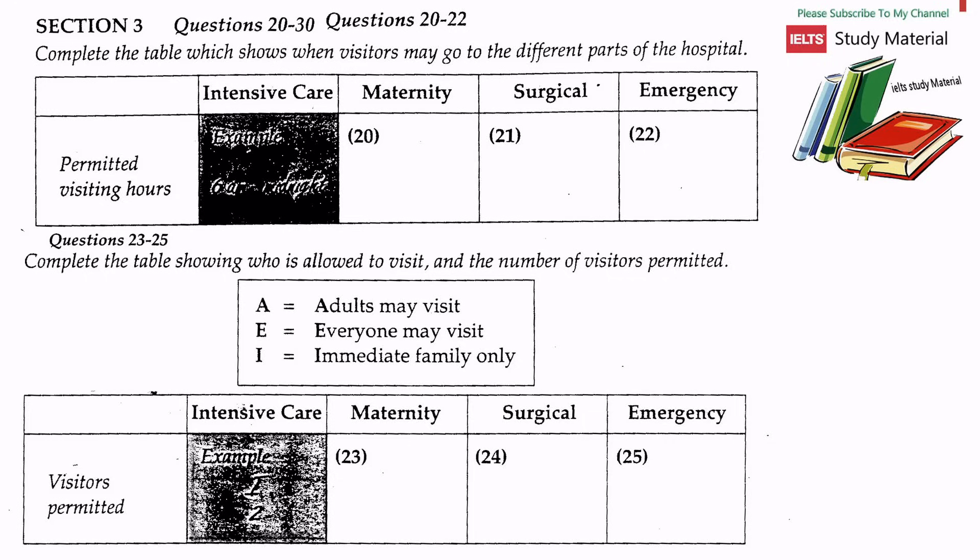Listen to the first part of the conversation and answer questions 20 to 22. Hello Andrew, I believe you want to know about visiting hours. Yes I do Mrs Lamb. I have to fill this form out and I'd like to have some idea why the different parts of the hospital have different times for visiting. Well, let's start with intensive care — visitors can come between 6 a.m. and midnight. Our maternity patients are usually quite well but we restrict their visiting hours from 8 a.m. to 8 p.m. as they get very tired.